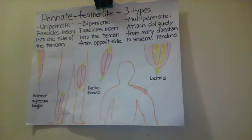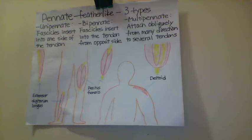Bipennate muscle — the fascicles insert into the tendon from the opposite sides. Rectus femoris is an example of this muscle. Multipennate muscle is attached from many directions to several tendons. The deltoid muscle over the shoulder is an example of this muscle.